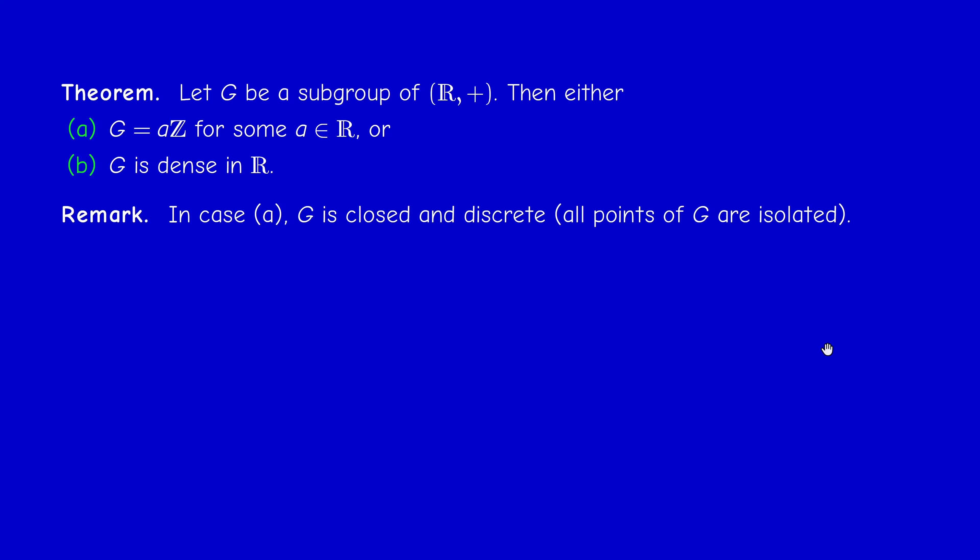In case A, G is closed — because aZ is just a copy of Z — so it's closed and discrete, which means that all points of G are isolated. So in the case aZ, it is just like Z.